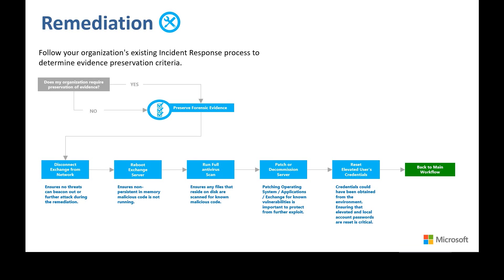The first step is to ensure that you have the ability to preserve forensic evidence for the potential of engaging an outside incident response firm or for legal and compliance needs. CISA has good guidance using freely available tools for how to complete this step. Once you have collected your forensic evidence, you should disconnect the Exchange server from the network — external and internal — to stop any command-and-control services or malicious code that beacons outside the network. The next step is to restart the Exchange server to remove any memory-resident, non-persistent threats from running on the system. This will not protect you from persistent threats designed to execute in memory upon restart, but will give you added assurances.